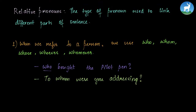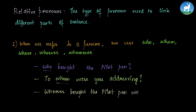'To whom were you addressing?' — we are talking about a person here also, hence we use whom because we're referring to a person. 'Whoever bought the pilot pen wants to speak with you.' A person has bought a pilot pen and the same person wants to speak with you, so we use whoever because we're talking about a person.